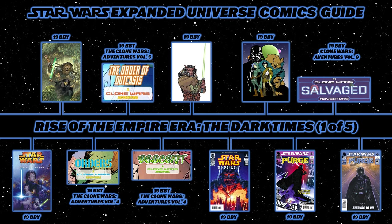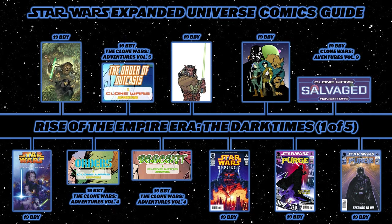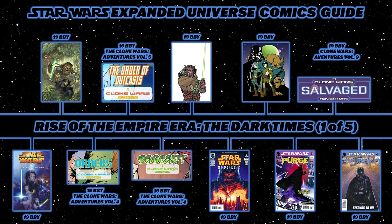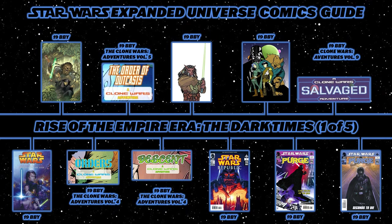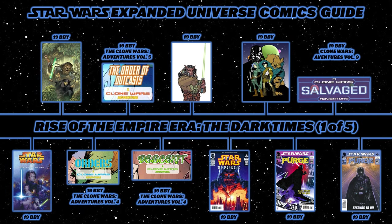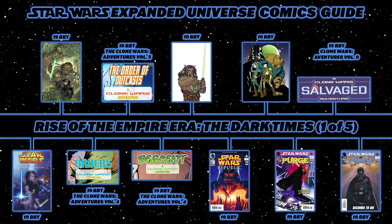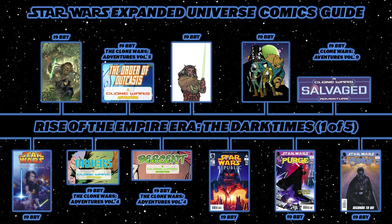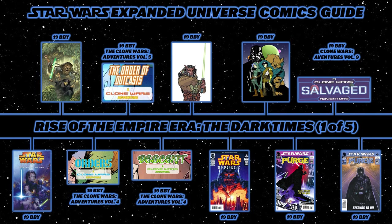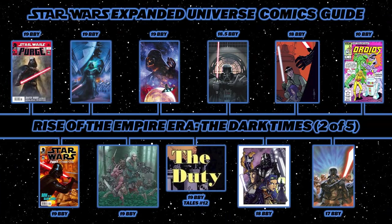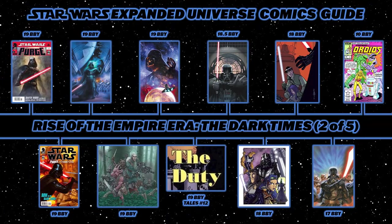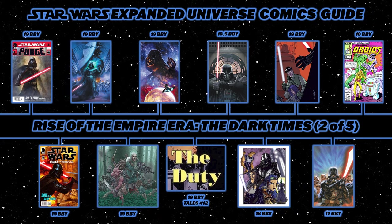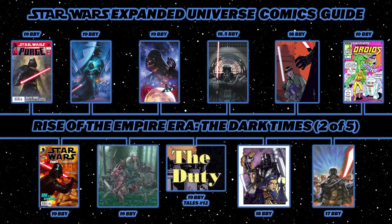From the Hyperspace web strips comes Evasive Action: Recruitment. Then we move into the Star Wars Purge series — one-shots starring Darth Vader. The first is simply called Star Wars Purge. Then Clone Wars Adventures Volume 9: Salvaged. Then back to Purge: Seconds to Die, Purge: The Hidden Blade, and the only Purge two-parter, The Tyrant's Fist, issues 1 and 2.